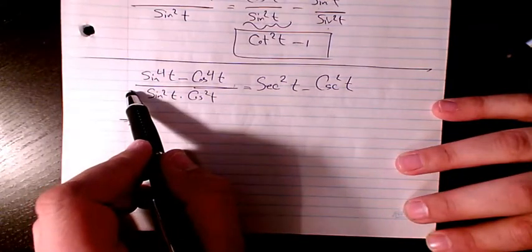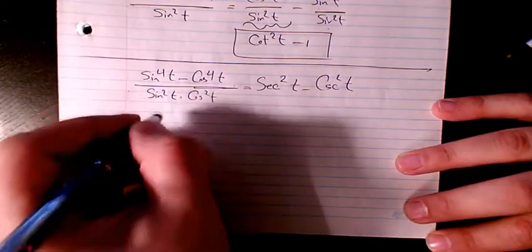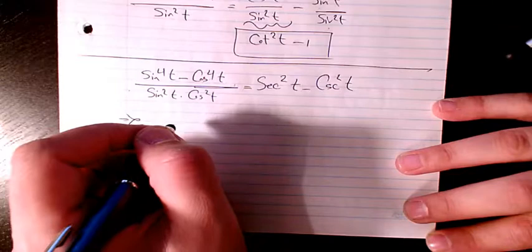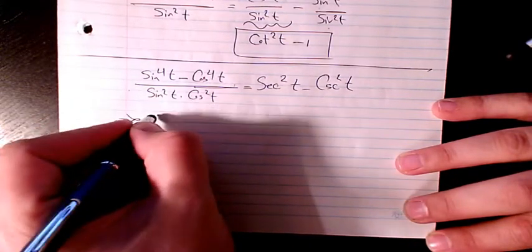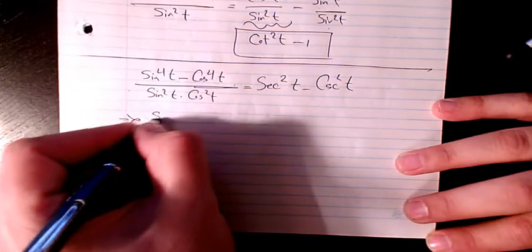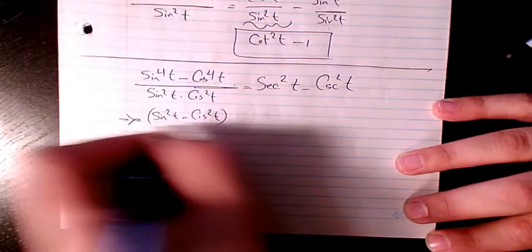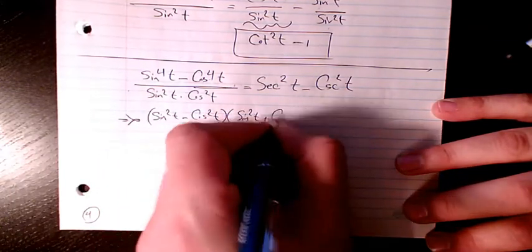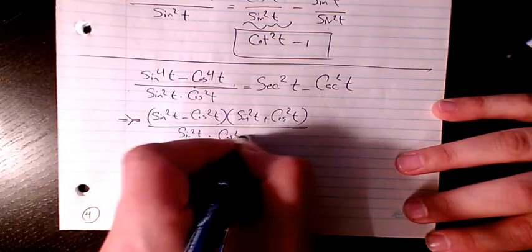We start from the left hand side because it looks more complicated than the right hand side. Based on the difference of squares, I can write that it will be equal to sine squared t minus cosine squared t, multiplied by sine squared t plus cosine squared t, divided by sine squared t times cosine squared t.